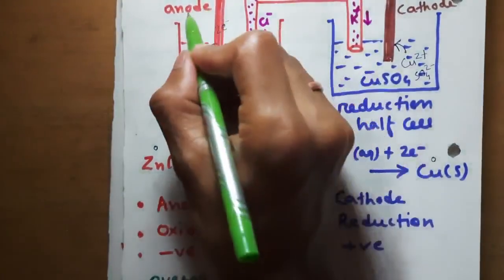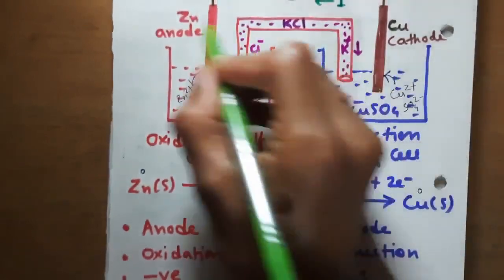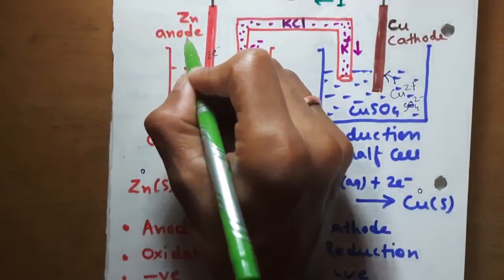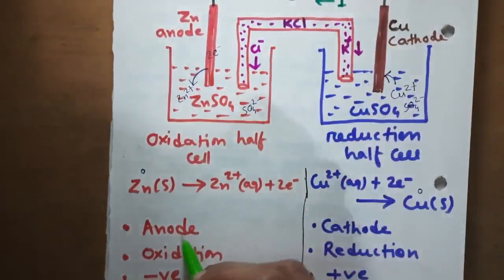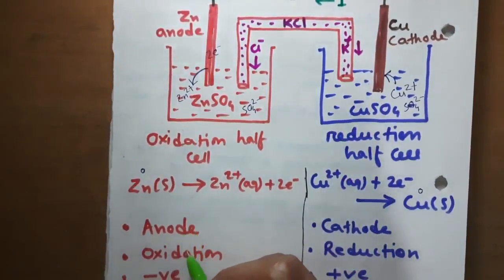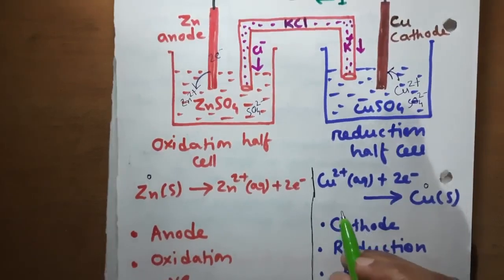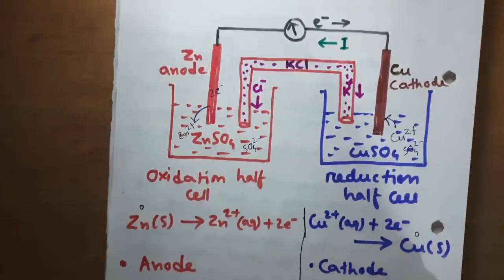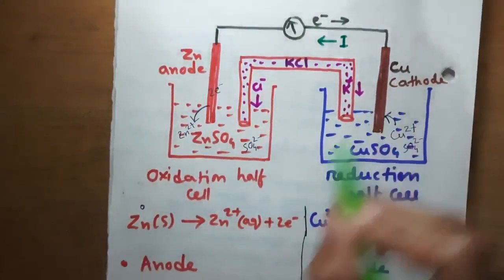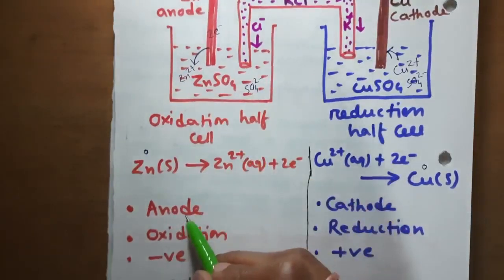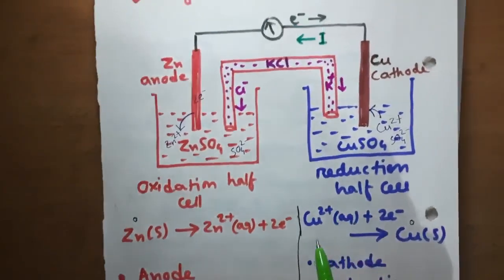Now we can use the terms anode and cathode. The zinc electrode acts as the anode and the copper electrode acts as the cathode. Anode is the electrode at which oxidation takes place and cathode is the electrode at which reduction takes place. In this cell, oxidation is taking place at the zinc electrode and reduction is taking place at the copper electrode, so zinc is the anode and copper is the cathode.